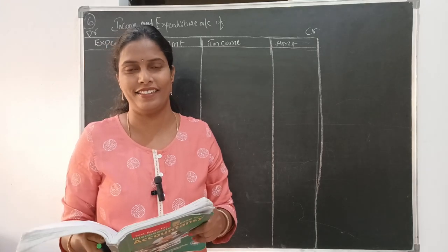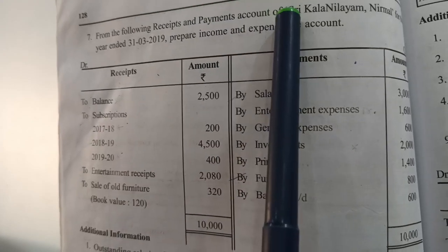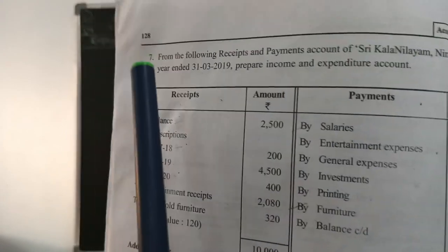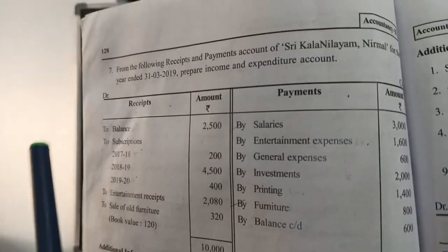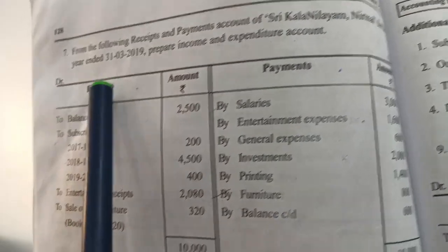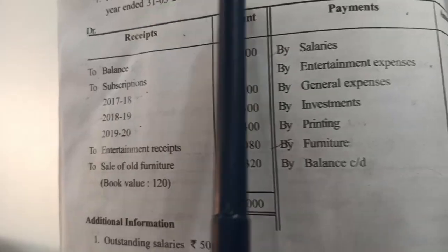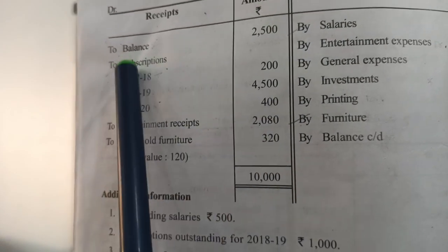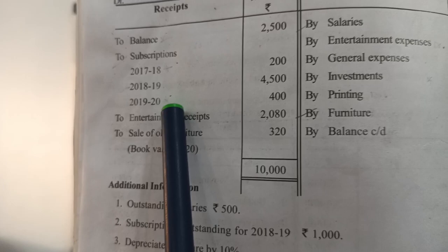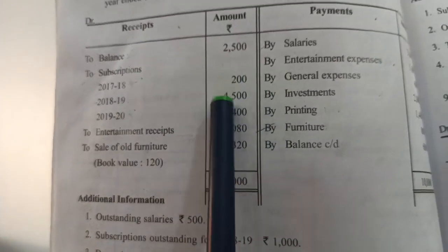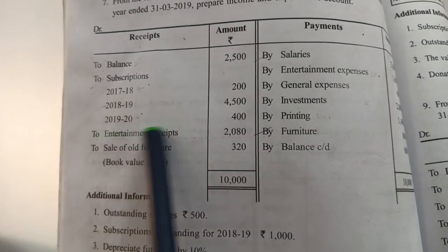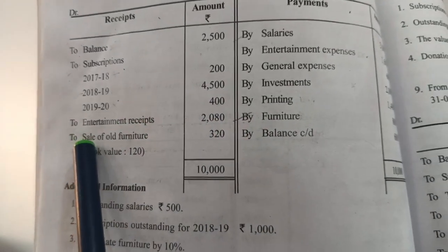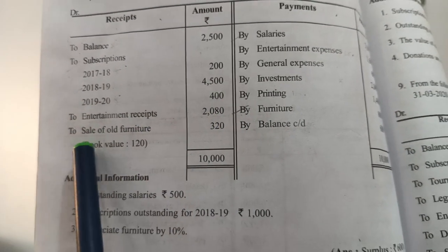So without any delay, let me read. From the following receipt and payment account of Sri Kala Nilayam, Nirmal, for the year ended 31st March 2019, prepare income and expenditure account. This is the receipt and payment account. Subscriptions are given for 3 years, but only current year subscriptions for 2018-19 we are going to take. Entertainment receipt is 2080 and sale of old furniture is 320.